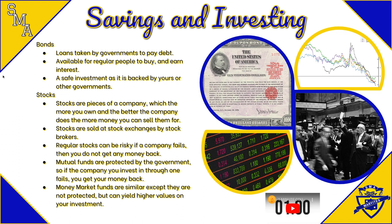Then there are money market funds, which are more of a private investment — like taking a lot of your money and putting it into one company. Those are not protected by the federal government. If you invest that money and the market collapses or the business fails, you don't get that money back at all. That's why mutual funds are a safer way of investing. Money market funds can get you a lot of money quickly, but there's a much higher risk.